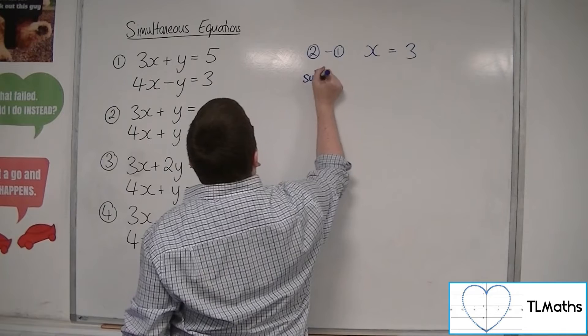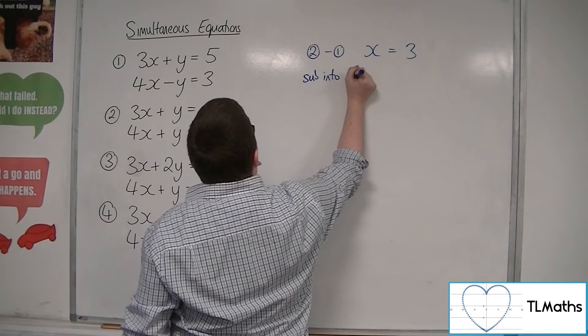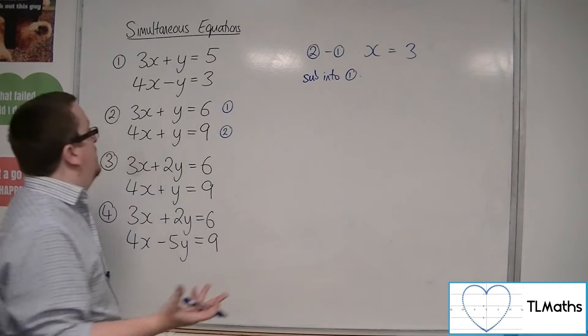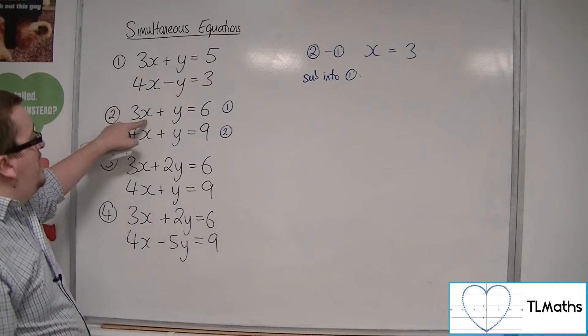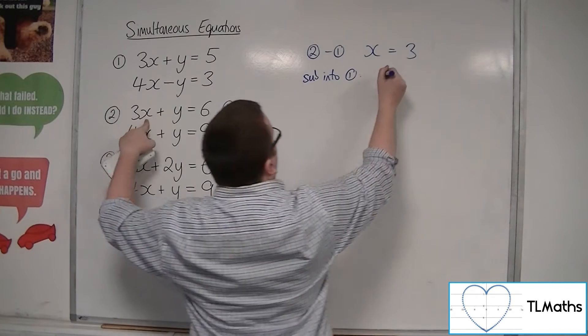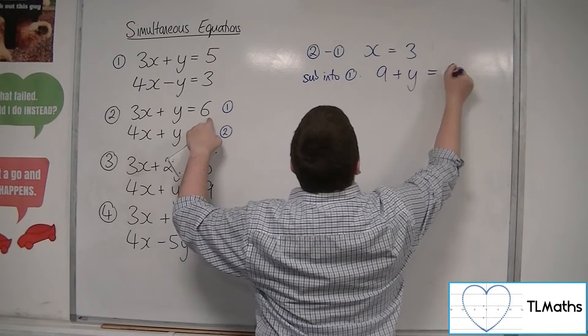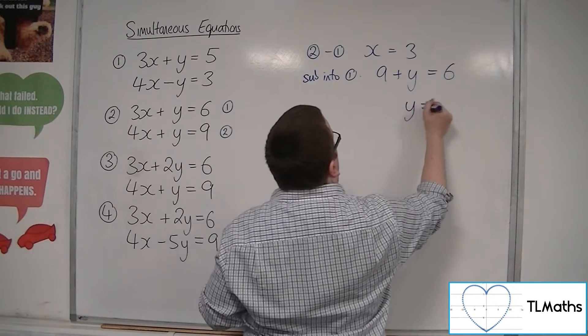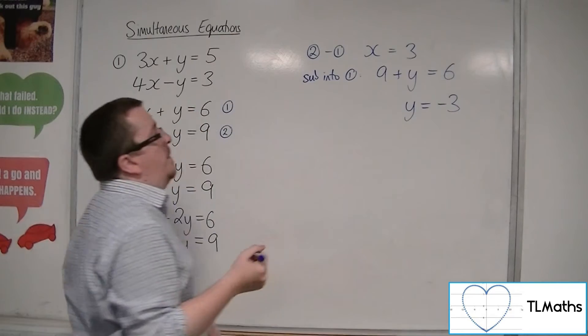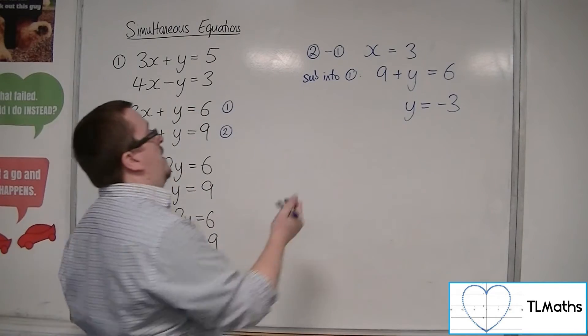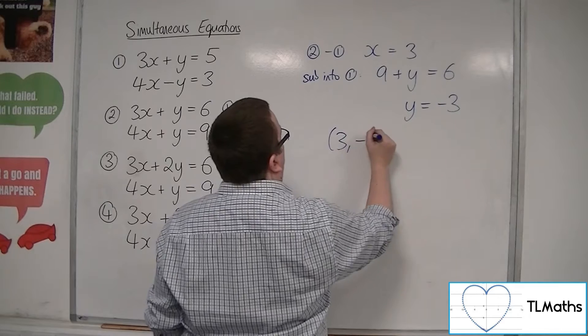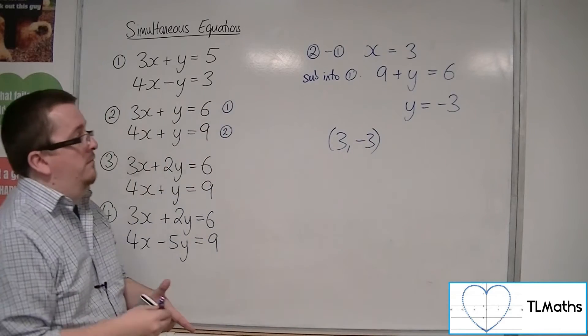Then I can substitute that into one of the two equations. I'll substitute it into number 1. So I've got 3 lots of x, so 3 times 3 is 9, plus y equals 6. Then subtract the 9 from both sides, so y is equal to minus 3. So these two lines intersect at the coordinates 3, minus 3.